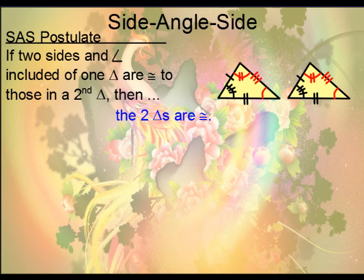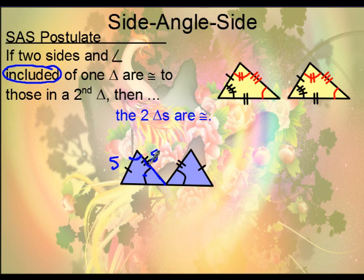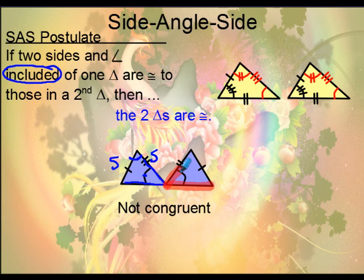Here's a pair that might look like side-angle-side but are not congruent. In this example, we definitely have two sides, but the angle is not between those two — it is not included. The angle has to be included between the two sides. In this case, we would need a different side in order to state that they are congruent because of SAS.